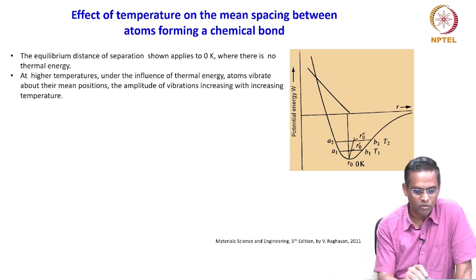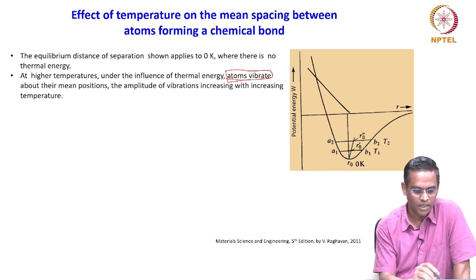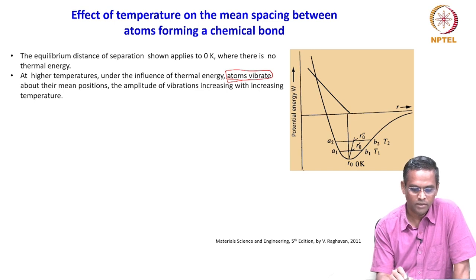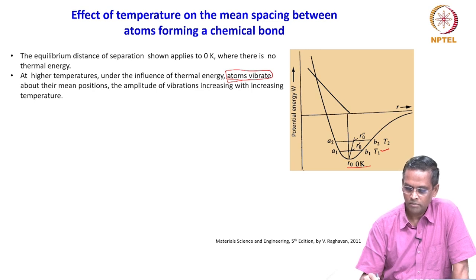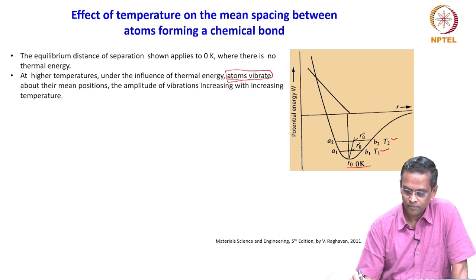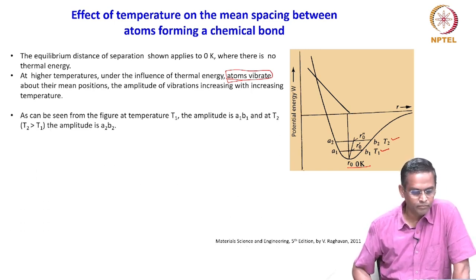At higher temperatures, under the influence of thermal energy, atoms vibrate about their mean positions. The amplitude of vibrations increases with increasing temperature. At temperature T₁, R₀ becomes R₀ prime and the atom vibrates between positions A₁ and B₁. At T₂, R₀ becomes R₀ double prime and the atom vibrates between A₂ and B₂.